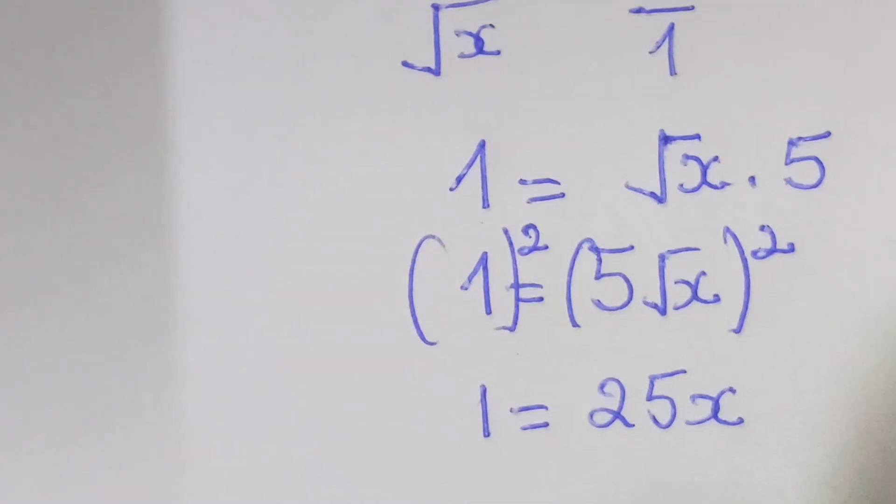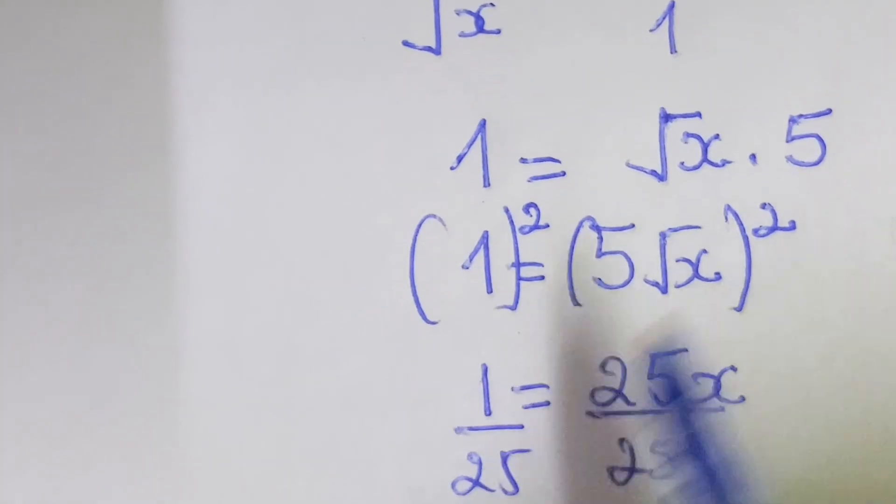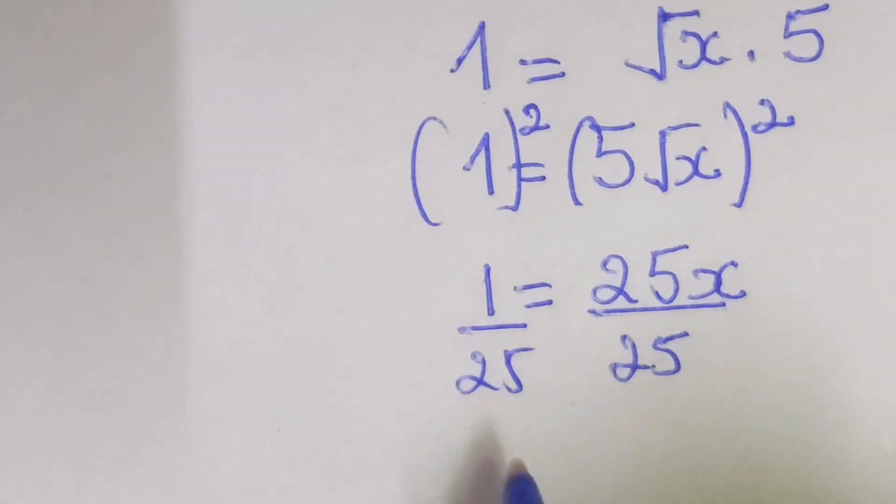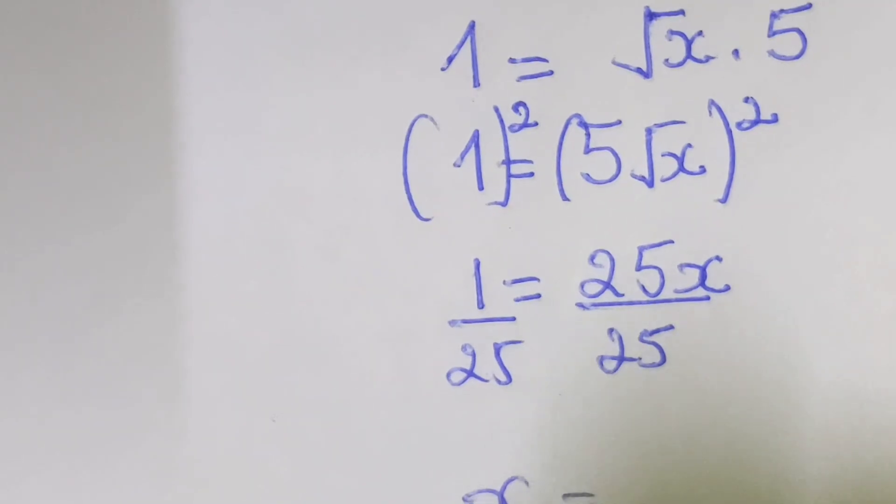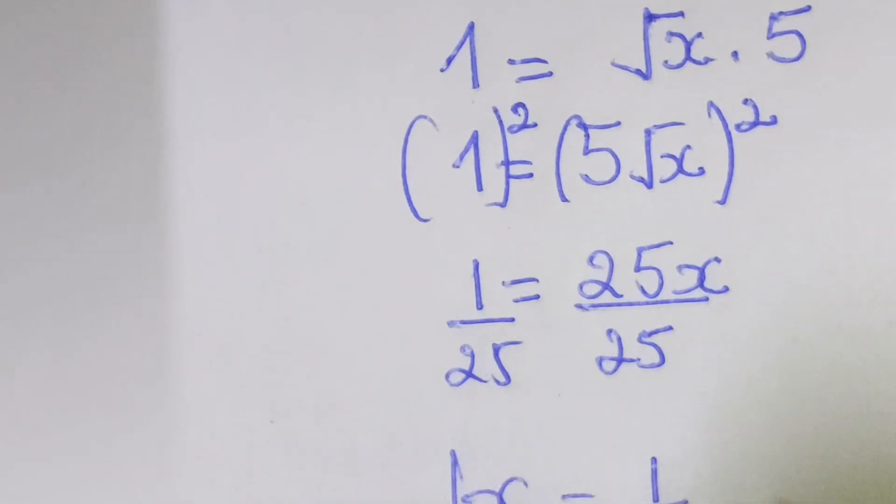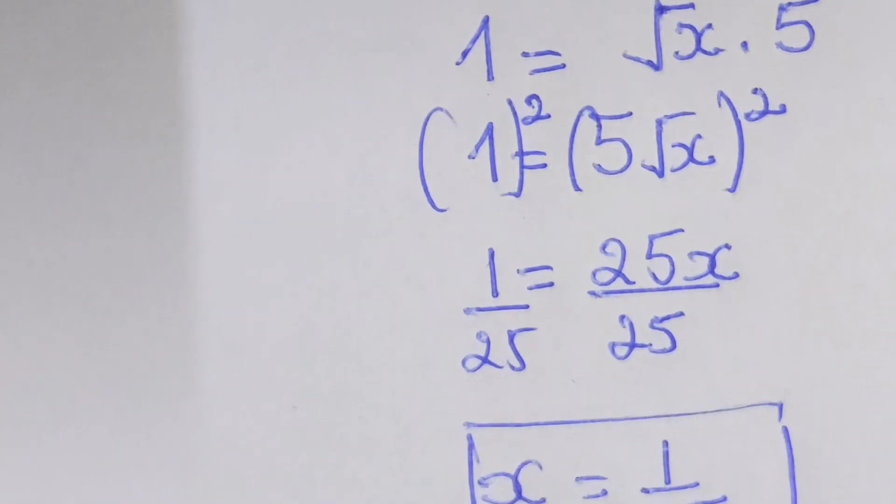By dividing 25, divide 25, we shall write that x equal to 1 over 25 as final solution.